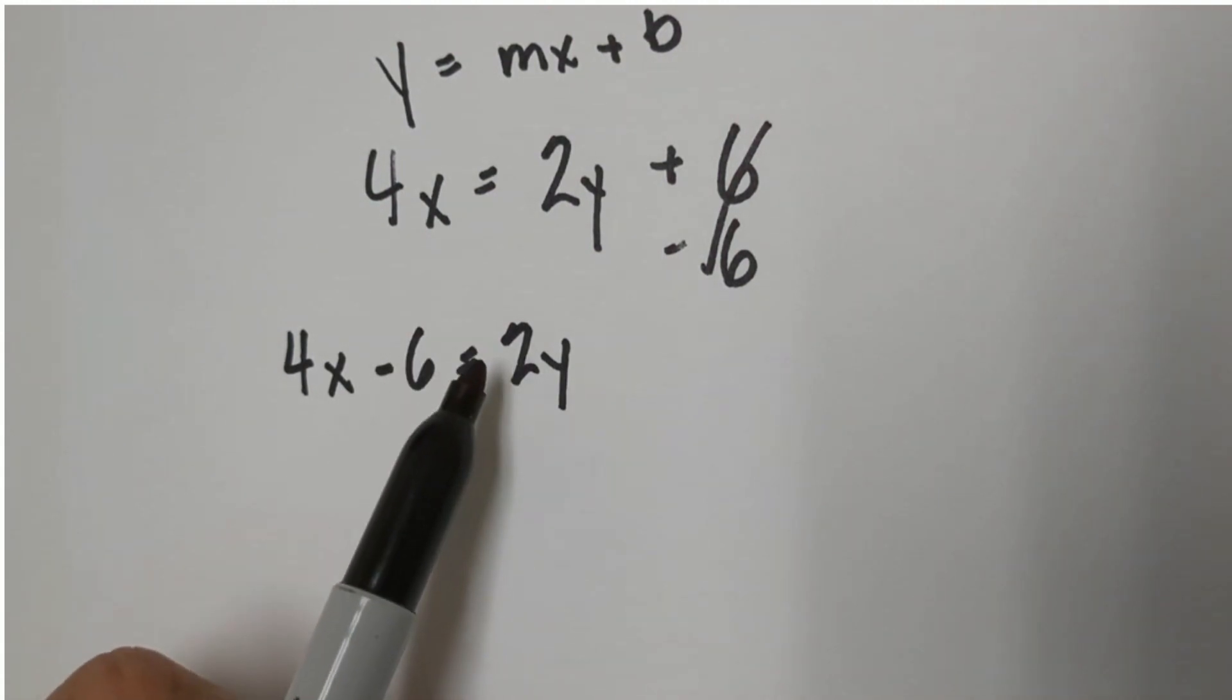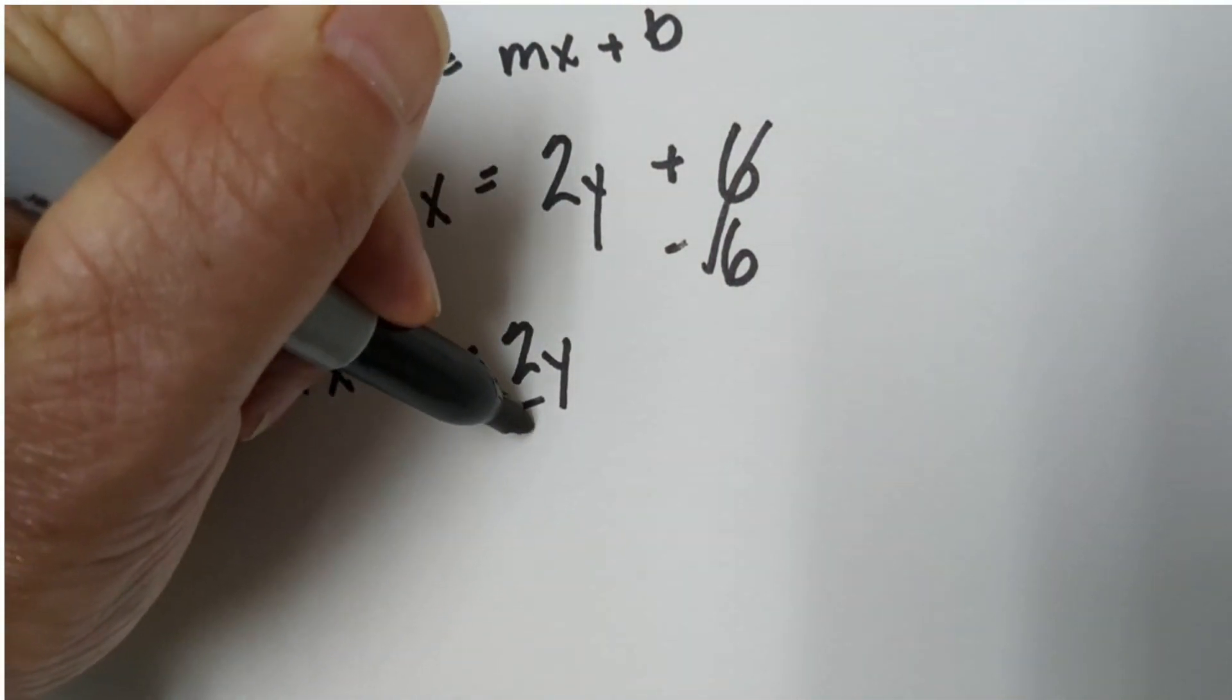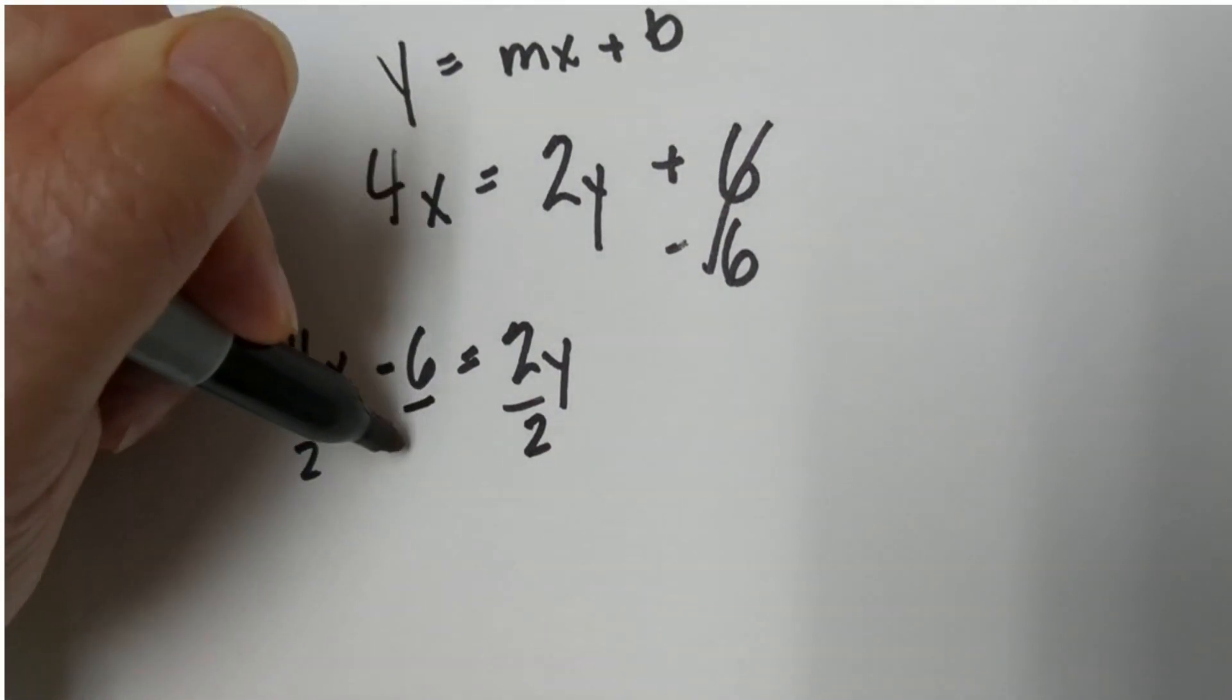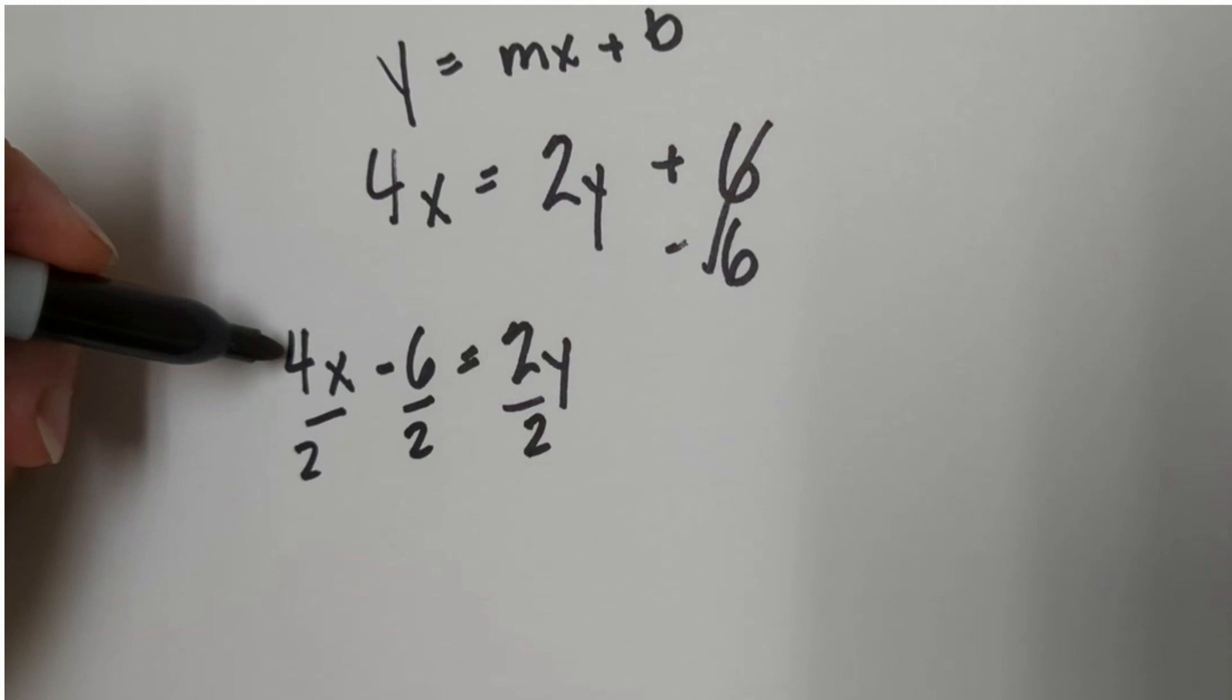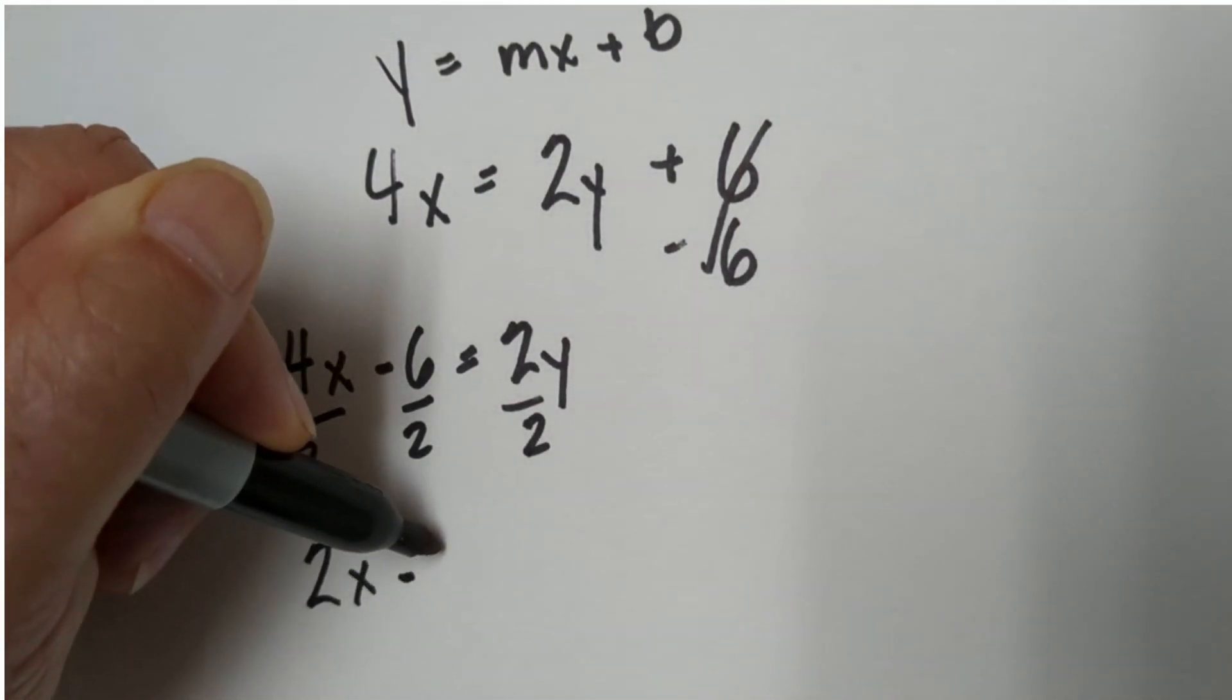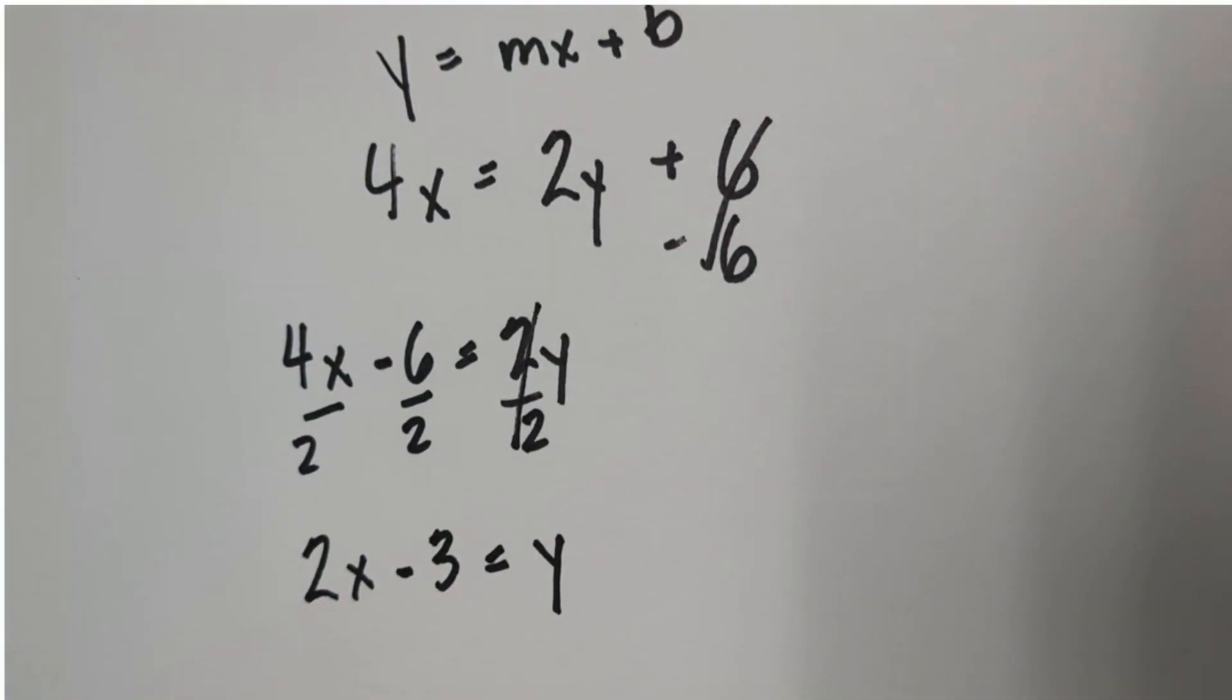Now we're close, but we still have the 2, which is a multiplication operation. So we can divide everything by 2 to get the y completely by itself. When we do that, 4 divided by 2 is 2x minus 3 equals y because these cancel.